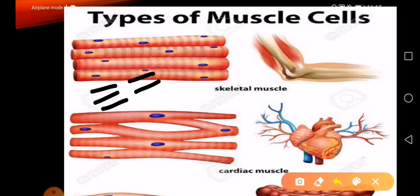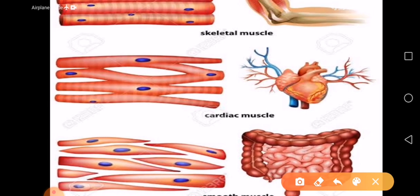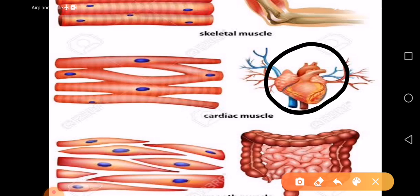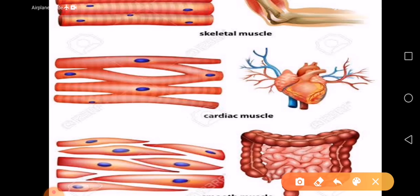For example, when we fold our hands, one side of the muscles contracts and the other side relaxes — this is why we can move our body. Coming back to cardiac muscles: they are present in the heart and connected by intercalated discs. This is why when one muscle contracts, the next one relaxes — they work in a coordinated way, which is why the heart does not get tired and continues beating.